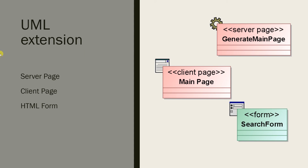The first part is the server page. A server page represents a dynamic web page that contains content assembled on the server each time it is requested. It can be implemented as a Servlet, JSP, ASP, or PHP page. As a constraint, a server page can only have normal relationships with objects on the server side. The server page has no tagged values.